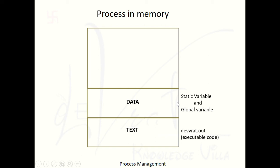That machine-level code resides in the text part. Then there is a data part. Inside the data part there are static variables and global variables. Global variable means you can access that variable from any portion of the program. For example, if you have a program of 80 lines and you declare a variable 'd' globally, you can access that variable 'd' throughout the entire program. This type of data resides in the data section.